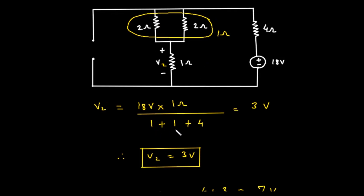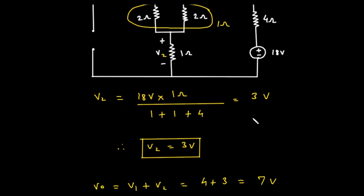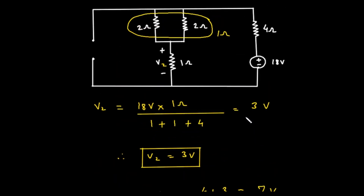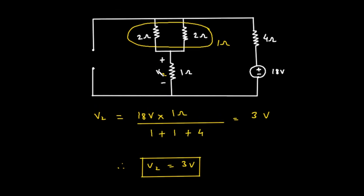Now we use the voltage divider rule to find V2. The voltage across a specific resistor in a series circuit equals the total voltage multiplied by that resistor's value, divided by the total resistance. So V2 = 18 × 1 / 6 = 18/6 = 3 volts. Let's quickly check the polarity: the current from the 18-volt source flows clockwise, passing through the 1-ohm resistor from top to bottom, creating a voltage drop with the top positive and bottom negative. This matches the polarity defined for V0 in the original problem, so V2 is a positive 3 volts.